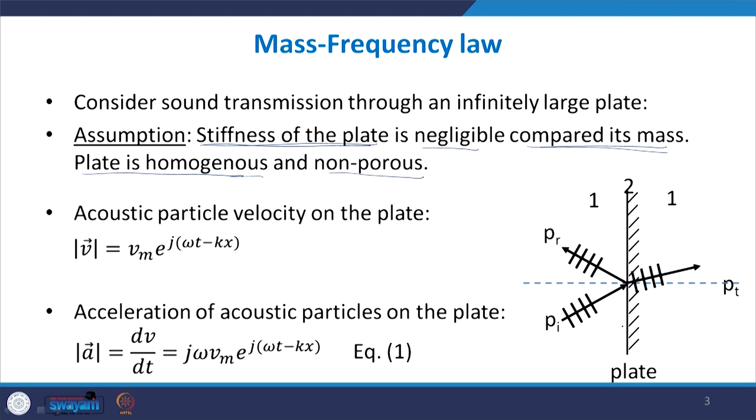The particle velocity on the plate can be given a simple harmonic form. All acoustic processes are adiabatic in nature, and small fluctuations are adiabatic. Because we are studying a harmonic plane wave front, the solutions are also harmonic. Small acoustic fluctuations are studied as harmonic solutions. Although there could be random noise, it can always be represented as a sum of harmonic solutions based on the Fourier series.